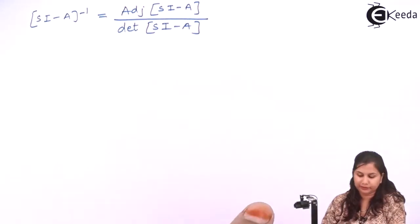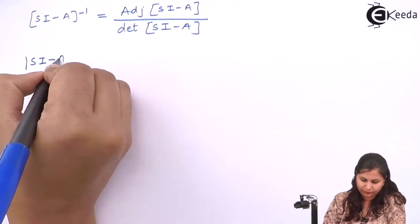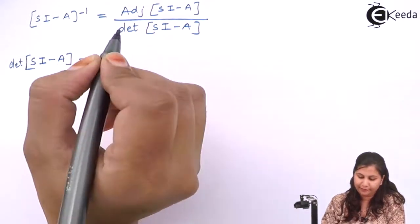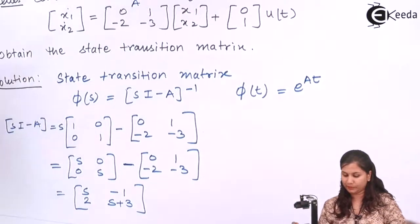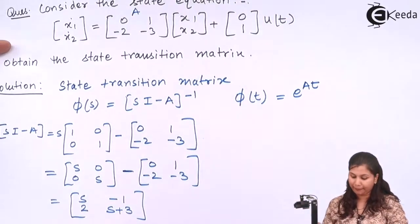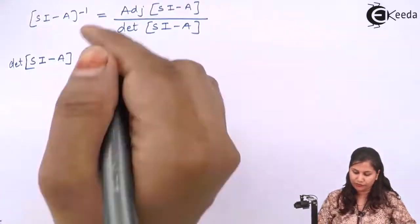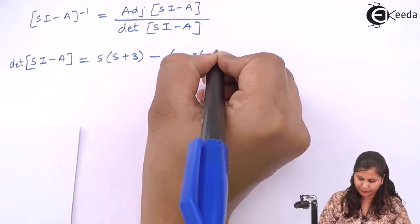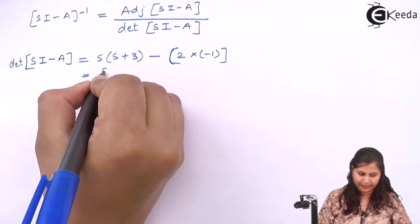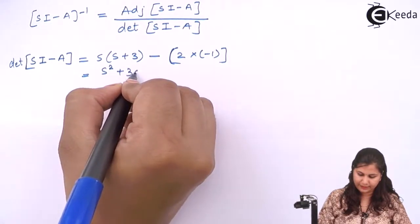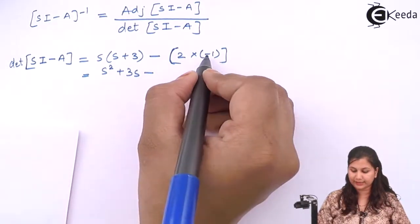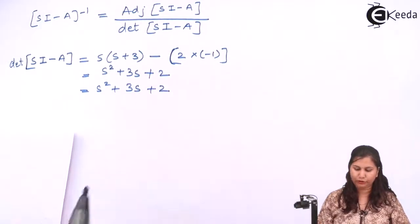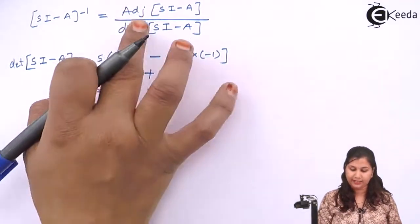The determinant of (sI - A) is calculated by multiplying s with (s+3) minus the multiplication of 2 and -1. This gives s squared plus 3s, minus (2 times -1) which is minus(-2), so plus 2. Therefore the determinant is s squared plus 3s plus 2.